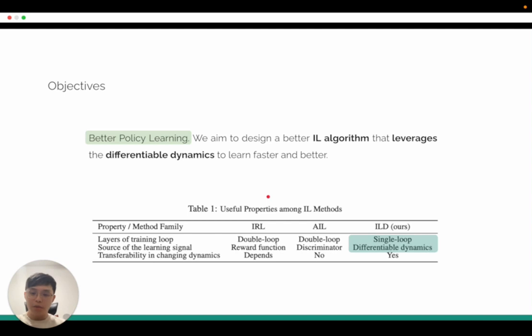There are two types of imitation learning methods. The first one is Inverse Reinforcement Learning. IRL learns an intermediate reward function and then uses the learned reward function to provide the signal to learn the inner policy.